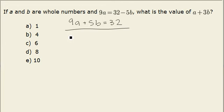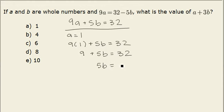I'm going to choose different values for a to see if they will work. First, I'm going to do a equals 1, so I will substitute 1 into the equation for a. 9 times 1 is 9, plus 5b equals 32. You need to subtract 9 from both sides, so 5b equals 23. And 23 is not divisible by 5 to get a whole number, so a equals 1 will not be a solution.